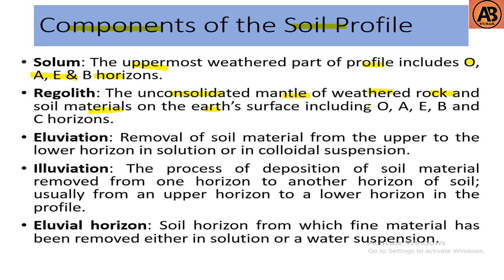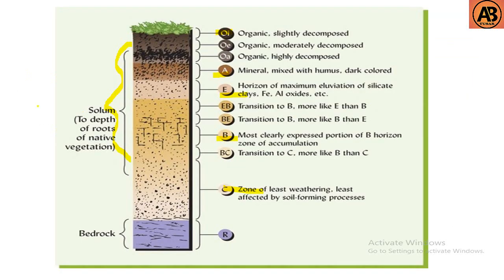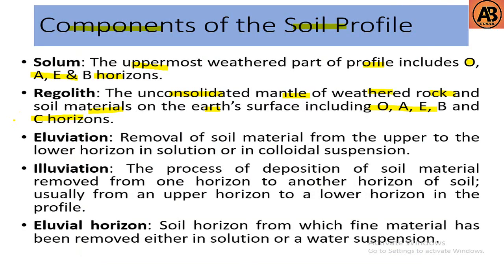Regolith is the unconsolidated mantle of weathered rock and soil materials on the earth's surface, including the O, A, E, B, and C horizons. That means the solum covers O, A, E, and B horizons, while regolith is solum plus the C horizon — so solum plus the C horizon is known as regolith.